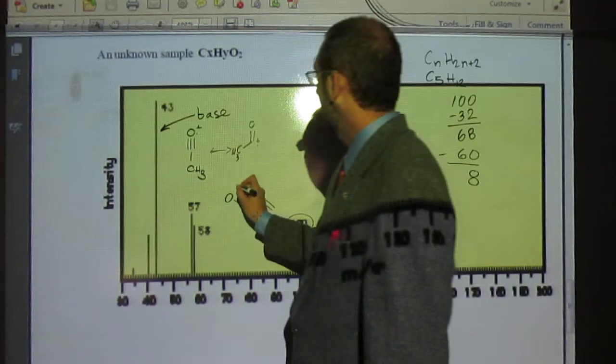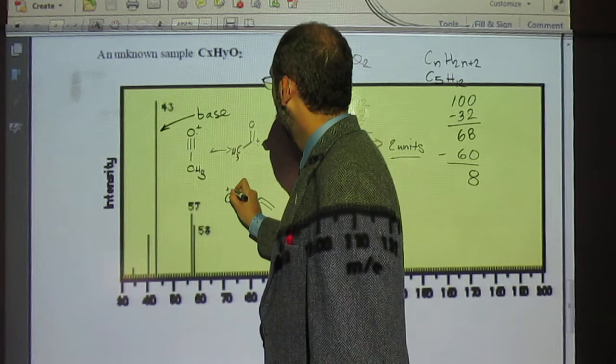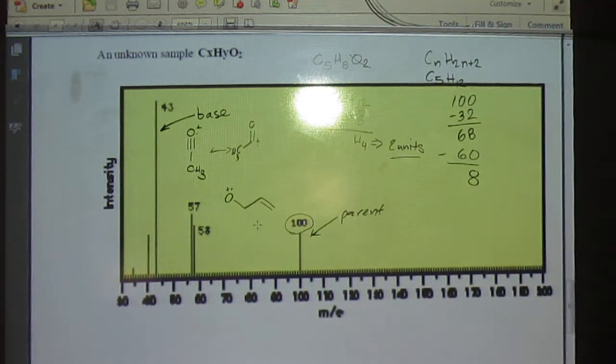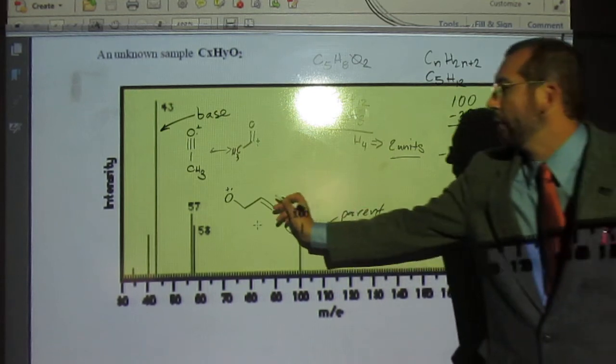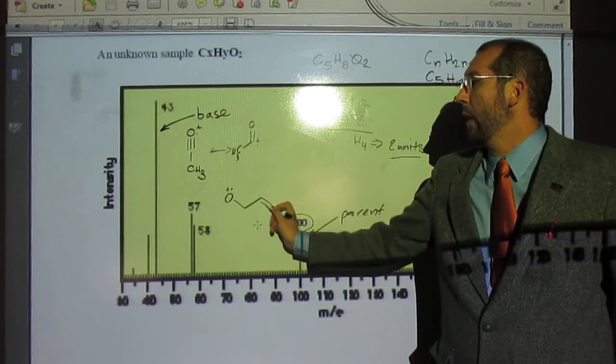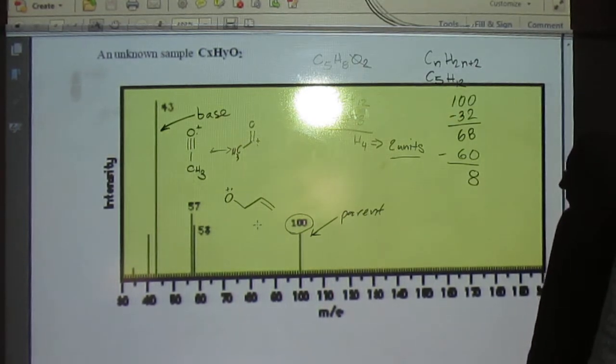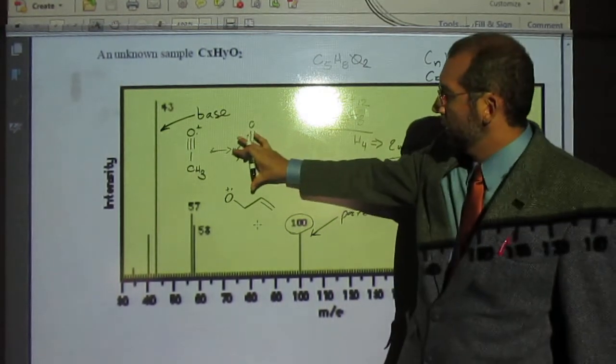So probably this thing is that fragment there. Or it could have the double bond there, but probably it's that one. And then all you do is connect these two fragments.